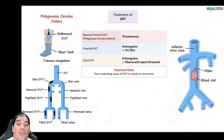S waves in lead I, Q waves in lead III, inverted T waves in lead III, and right bundle branch block, along with right axis deviation — a deep S wave in lead I and a big R wave in lead III — are all signs of right heart strain because blood can't get out of the right heart into the pulmonary artery due to the embolus. However, by far the most common ECG finding in real practice is just sinus tachycardia. The S1Q3T3 pattern is a boards classic.